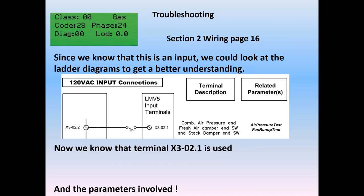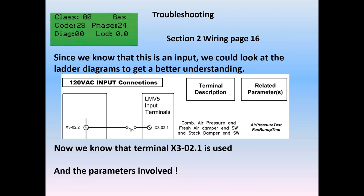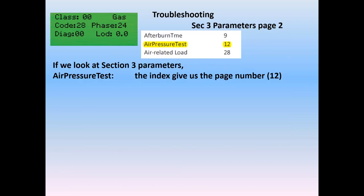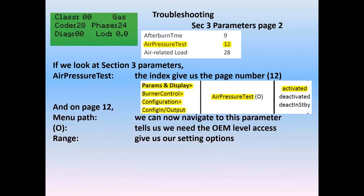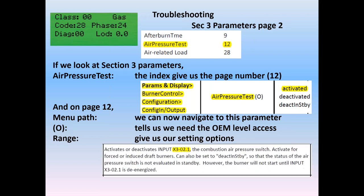Now we know X302.1 is used and the parameters involved in diagnosing the fault. If we look at section 3 parameters — since we know the parameter name is called air pressure test — the index tells us to go to page 12. When we go to page 12, we have a menu path. We can simply go to the AZL: parameter display, burner control, configuration, configure input/output, and we see the air pressure test parameter displayed. The 'O' on here tells us we have to be logged in at the OEM level to access this parameter. The range gives us our options: activate, deactivate, and standby — and a description giving us complete detail on how those parameters work.